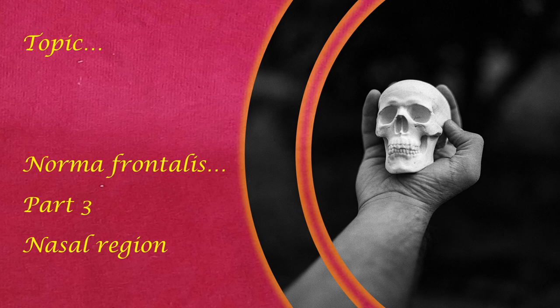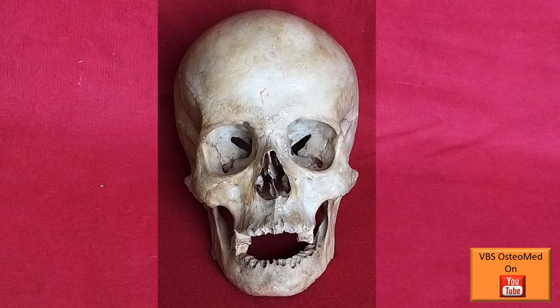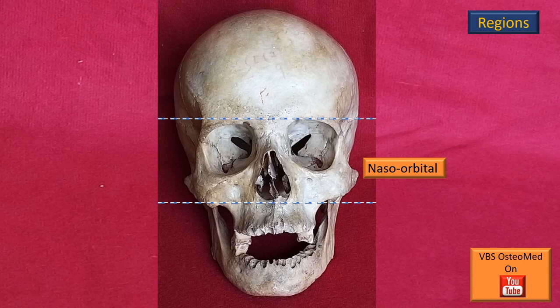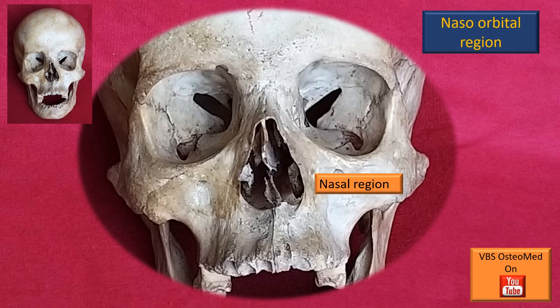Here we cover the nasal region. In the previous two parts — part 1 we covered the frontal region, part 2 we covered the orbital region — and now in this part 3, let's look at the nasal region of Norma frontalis. We start with the same slides seen in parts 1 and 2, where we divided the skull roughly into 3 areas: frontal, naso-orbital and oral. Now let's concentrate on the naso-orbital area, and more specifically, let's look at the nasal region.